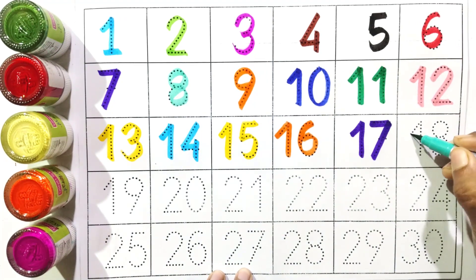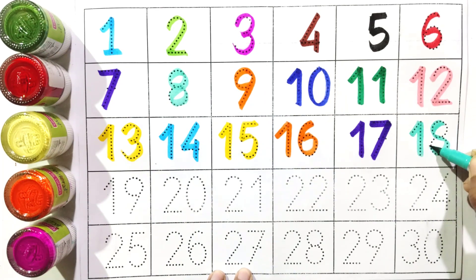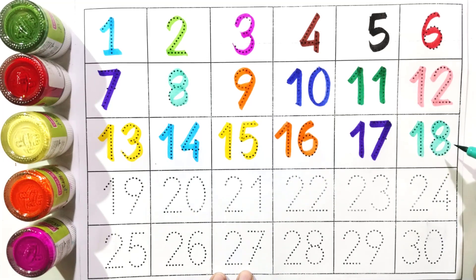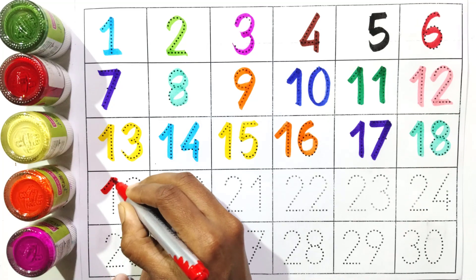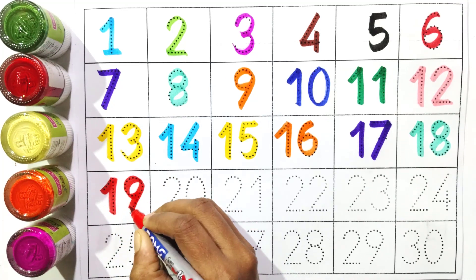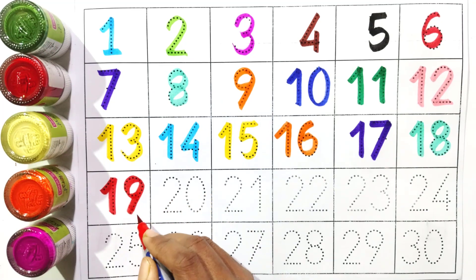One and eight: eighteen. Say with me: eighteen. One and nine: nineteen. Say with me: nineteen.